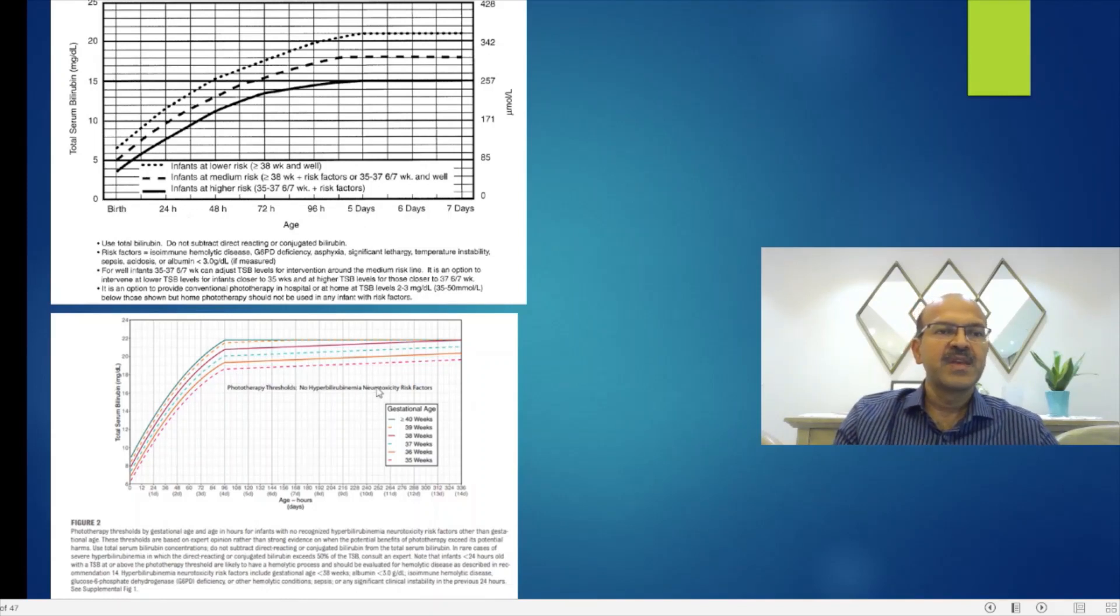As we can see here, the treatment thresholds overall are not much different, so it won't make a huge difference. Of course, it makes it safer for the smaller babies where you start the treatment at a lower threshold, and it may reduce overtreatment in the slightly bigger babies as the chart keeps going up with the gestation.